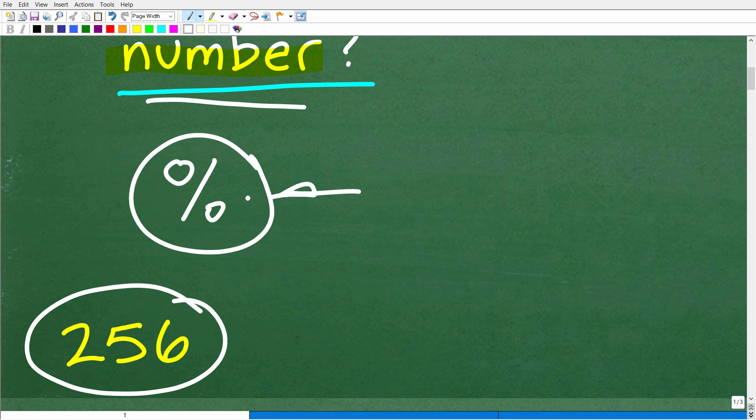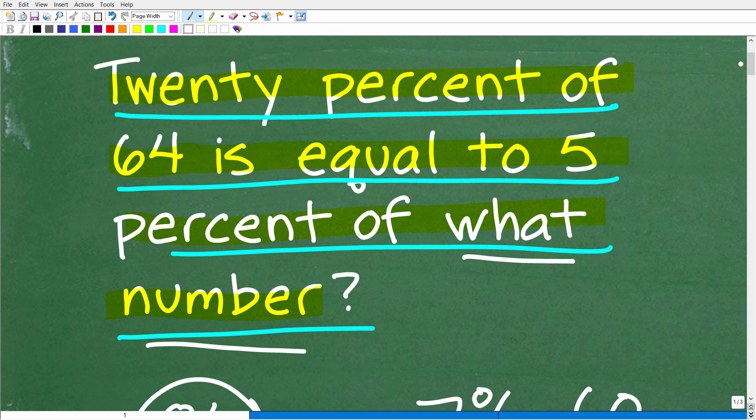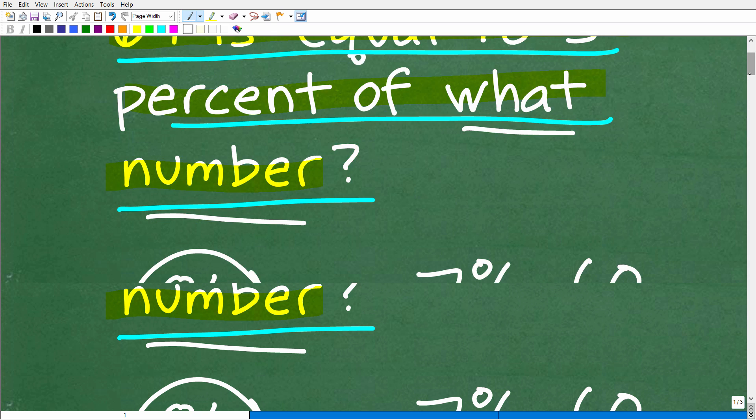If there's any one thing that you really want to understand in math, that is percent. Now a lot of people think they understand everything about percent because they could do a simple problem like 7% of 60. But actually there are much more challenging and interesting percent problems, and the one we're looking at right now happens to be one of these type of problems. The key to solving this particular problem is twofold. I'm going to be using algebra to solve this problem. But the second part involves translating a verbal problem into a mathematical problem.